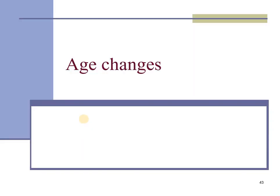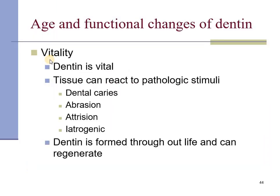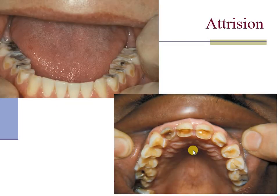Dentine is a dynamic tissue with various age changes. It is a vital tissue with dentinal fluid moving in and out of it. Dentine reacts to various pathological stimuli like dentinal caries, abrasion, attrition, or iatrogenic causes such as cavity preparation. Unlike enamel, dentine is formed throughout life and can regenerate.